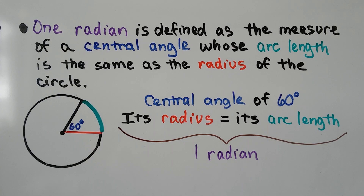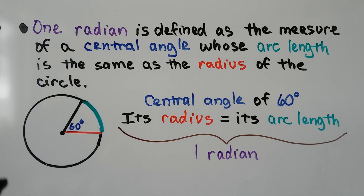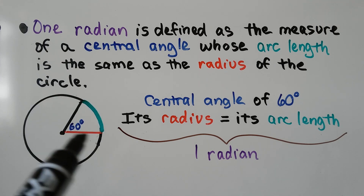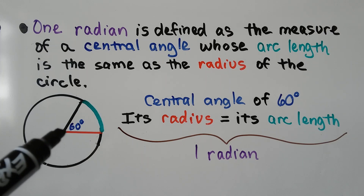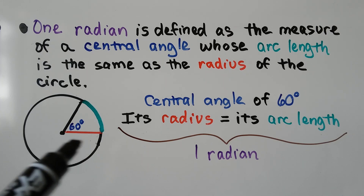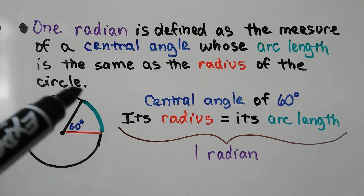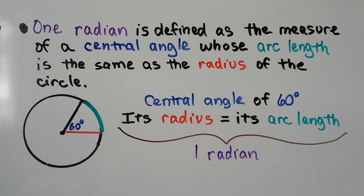One radian is defined as the measure of a central angle whose arc length is the same as the radius of the circle. So for this central angle of 60 degrees, its radius is equal to the length of its arc — that's 1 radian.